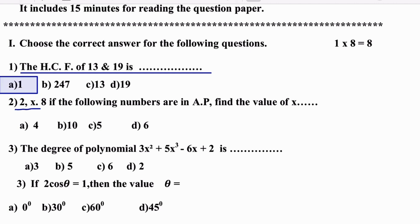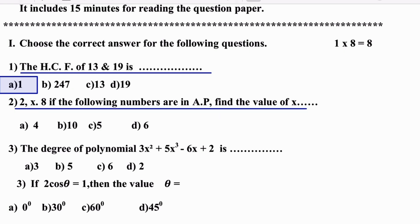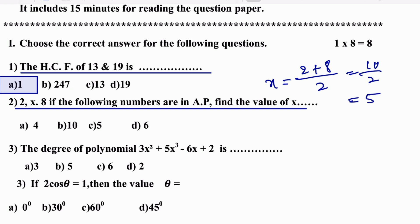Next: 2, X, and 8 — if the following numbers are in AP, find the value of X. We know the formula: X is equal to (2 + 8) / 2, which gives 10 / 2, that is 5. So C is the right answer.